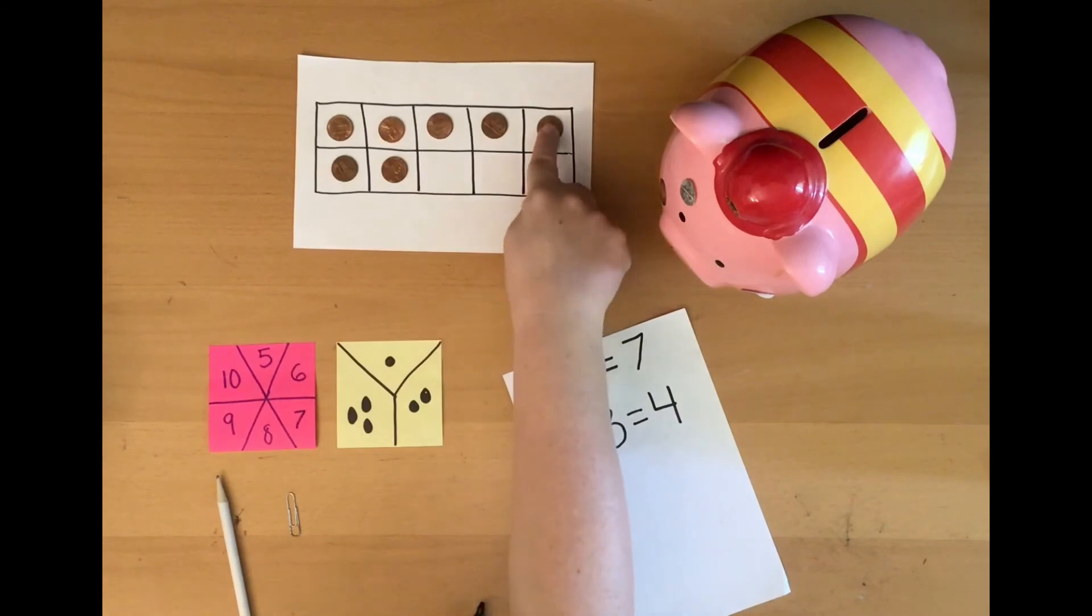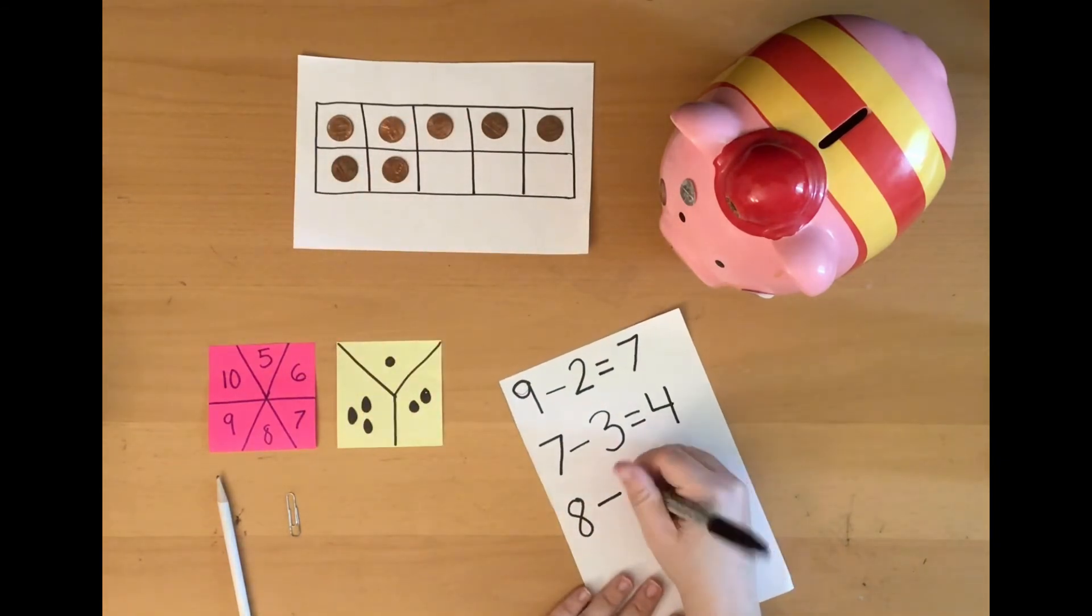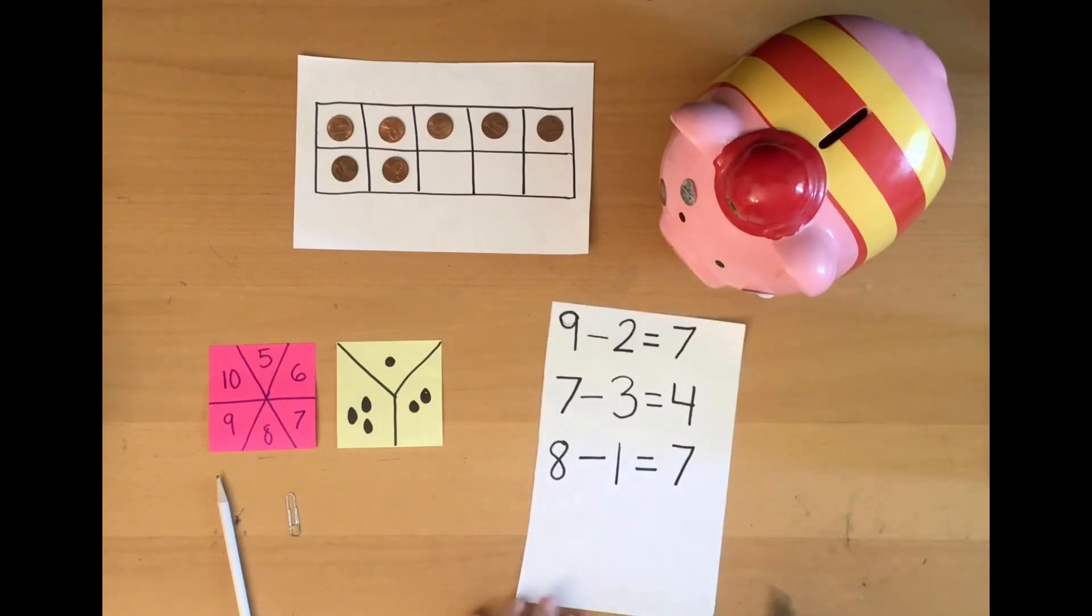Or I can change it to 5s and see 5, 6, 7. So 8, we took away 1, and that equals 7. Read that with me. 8 minus 1 equals 7.